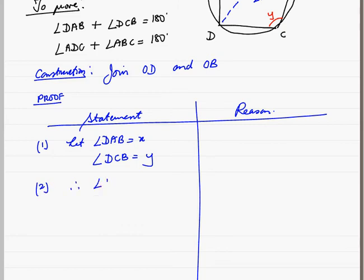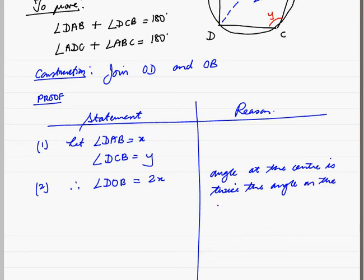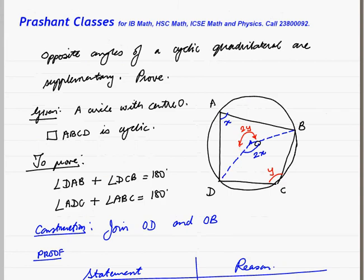Statement 2: Therefore, angle DOB will be equal to 2X. The angle at the center is twice the angle at the circumference by the same arc. Also, reflex angle DOB will be 2Y by the same reason. Reflex is an angle which is greater than 180 but less than 360.